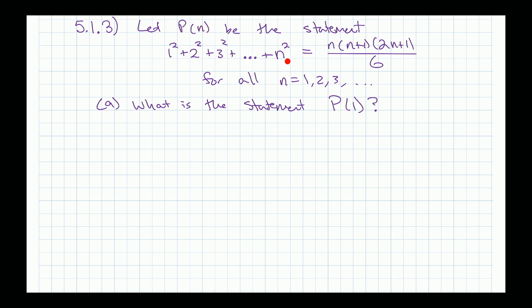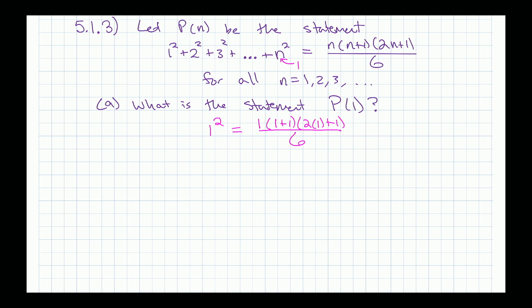What they want you to do is take the formula for P(n) and plug in n=1. On the left-hand side, you'd be stopping at 1², so the left-hand side is just 1². On the right-hand side, you have n in three places, and you replace all of them with 1: so you get 1·(1+1)·(2·1+1) over 6. That's the statement P(1).